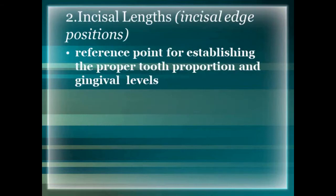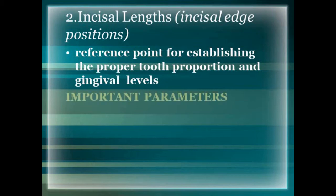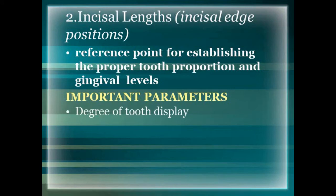The next tooth component is the incisal length or incisal edge position, which is the most important tooth component as it acts as the reference point for establishing proper tooth proportion and gingival levels. The position of the incisal edge influences the labial contour of the incisors, the lingual contour, as well as the anterior guidance. There are three important parameters when setting the maxillary incisal edge position: degree of tooth display, phonetics, and patient input.